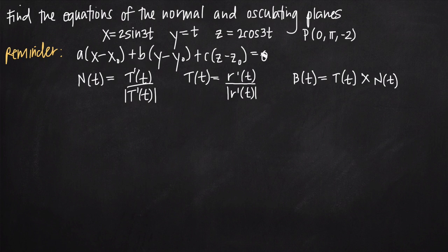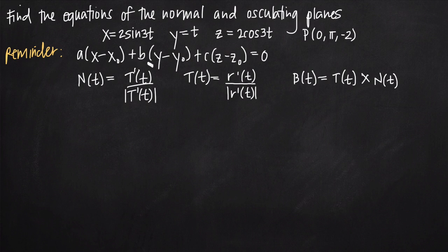As a reminder, I've written some equations that we're going to need. This is the basic equation of a plane, where a is the slope in the x direction, b is the slope in the y direction, and c is the slope in the z direction. We'll plug in the coordinate point for x₀, y₀, and z₀. Really, all we need to find the equation of the plane are the values for a, b, and c — and we're going to need two sets: one for the normal plane and another for the osculating plane.